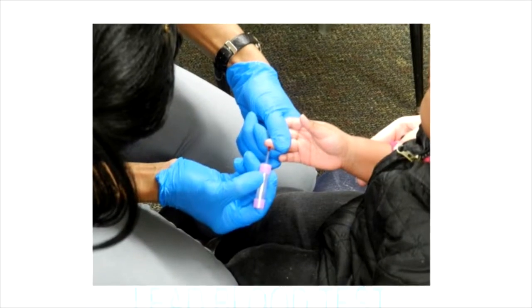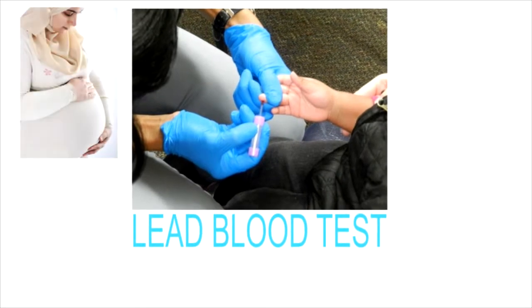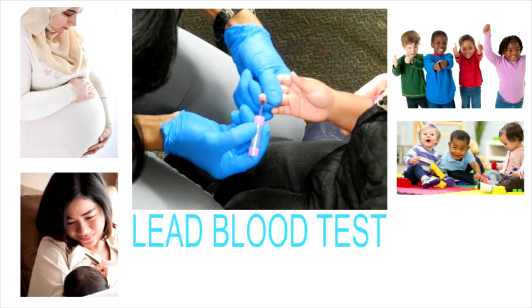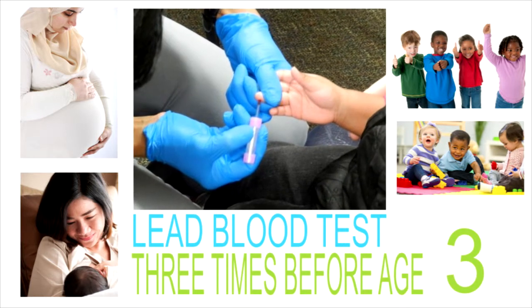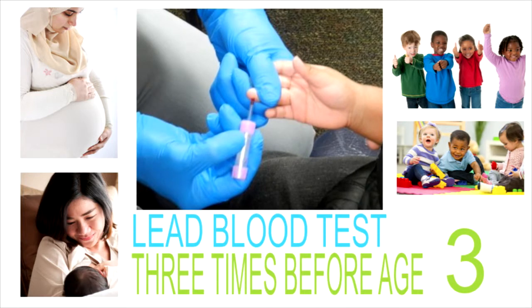The only way to know if your child has been exposed to lead is to have a lead blood test. If you're pregnant, breastfeeding, or have a child under age 6, talk to your doctor about testing. All Milwaukee children should be tested 3 times before the age of 3. Some children may need to be tested up to age 6.